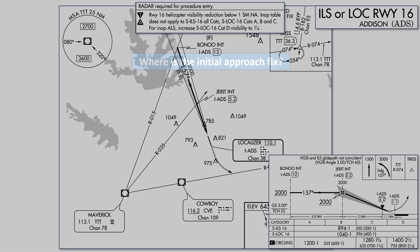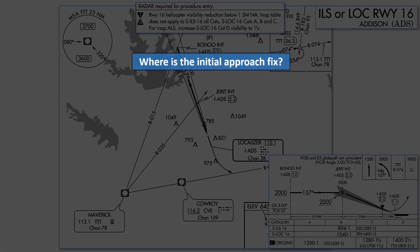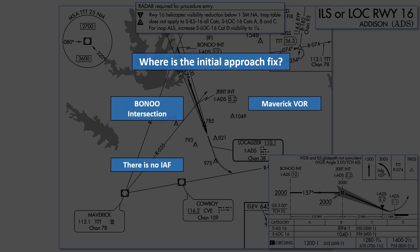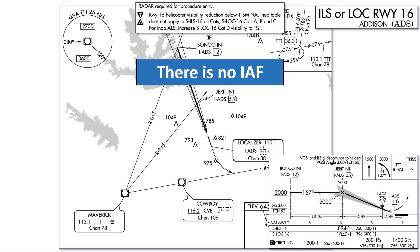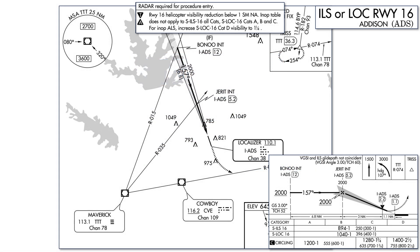Question 1: Where is the initial approach fix for this approach? Banu Intersection, Maverick VOR, there is no initial approach fix, or Jarrett Intersection? It's a bit of a trick question. There is no initial approach fix here. An IAF would be noted as such with those letters, but they don't appear anywhere on the plate.